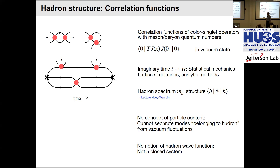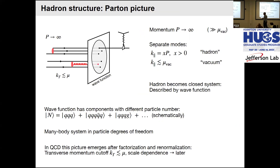However, in this method we have no concept of the particle content of hadrons. We cannot separate modes belonging to the hadron from vacuum fluctuations — a quark observed somewhere is indistinguishable from a vacuum fluctuation. A hadron in QCD in this form is not a closed system in the quantum mechanical sense — it is coupled to vacuum fluctuations.